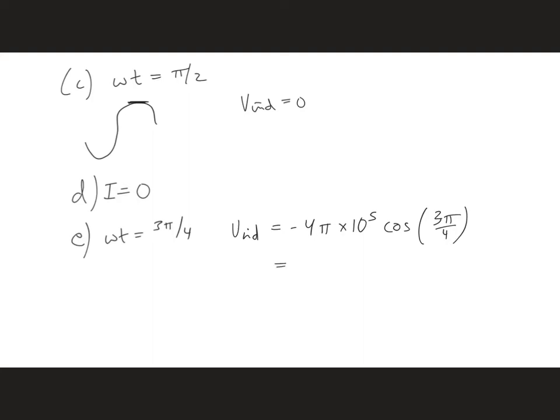That's a negative number, and we have a negative out in front. So we're going to get a positive 4 pi over square root of 2 times 10 to the fifth volts. This is a positive number.